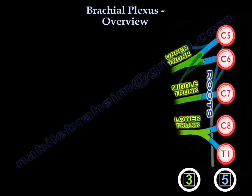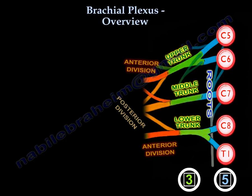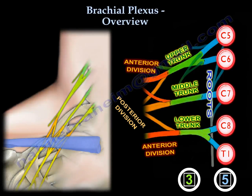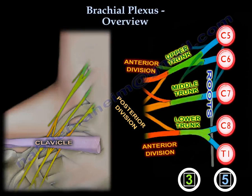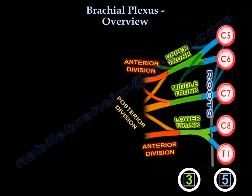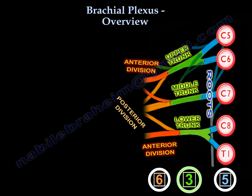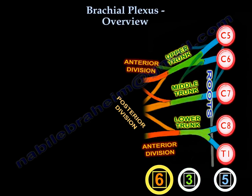Each of the three trunks divides into an anterior and a posterior division. These divisions pass behind the clavicle. So three trunks give you six divisions. The running count is: five roots, three trunks, six divisions.